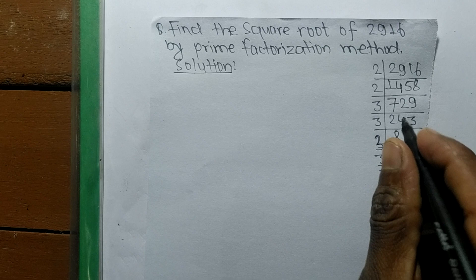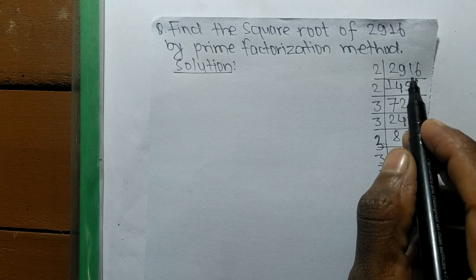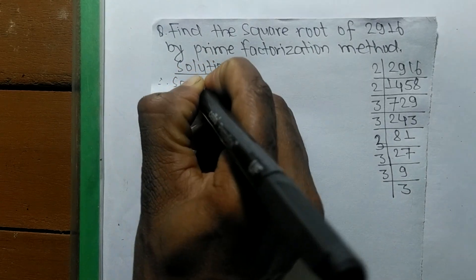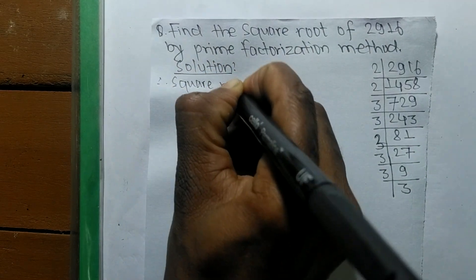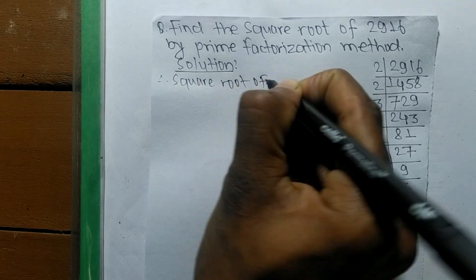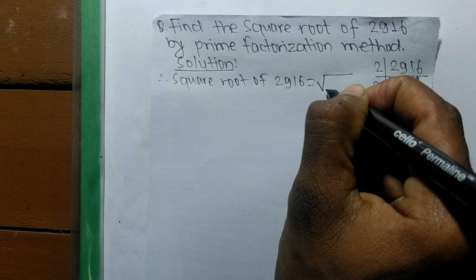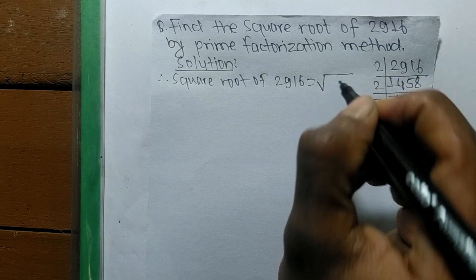So we have taken here the prime factors of 2916. So now we shall find the square root. So square root of 2916, this sign is the sign of a square root.